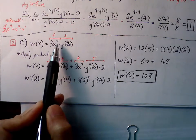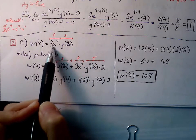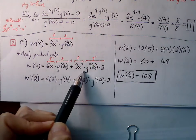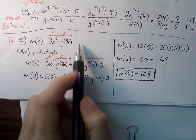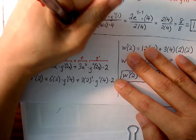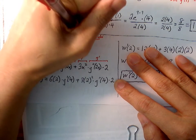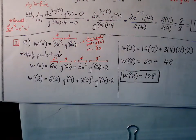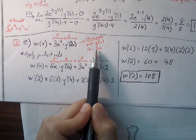Product rule: f prime g plus f g prime. Three x squared becomes six x; we keep G prime of two x intact. Back to the f function kept the same, and now there's a chain rule on G prime of two x. The outside G prime of parentheses becomes G double prime, we keep the inside two x unchanged, and then multiply by the inside derivative: two x becomes two. So the second term becomes three x squared times G double prime of two x times two.